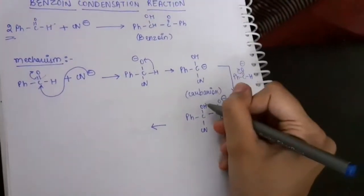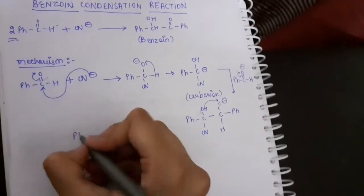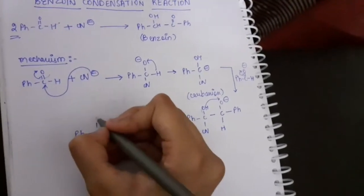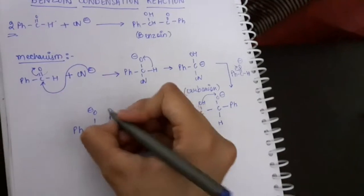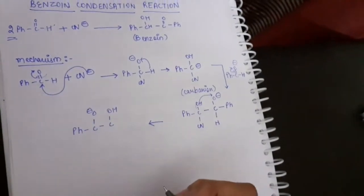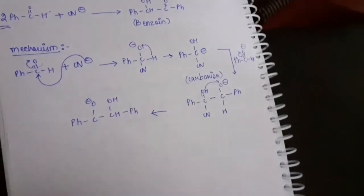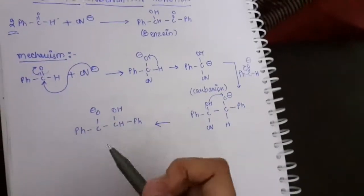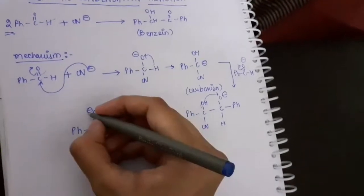This hydrogen of this OH would be shifted here. Then what do we get? Ph-C single bond O with the negative charge, and there's the C-OH. CH-OH-Ph - this is what you'd be having. Now in order to - and we have a cyanide here as well.